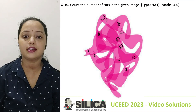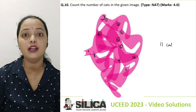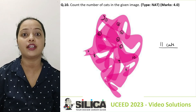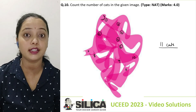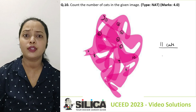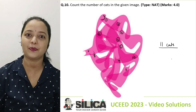So the number of cats in this particular figure is equal to 11, and that's the final answer to the question as per the answer key. So that's it with the question everyone, thank you.